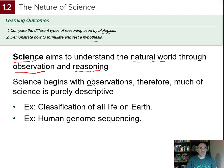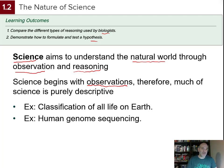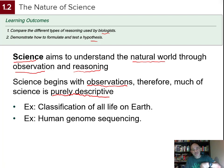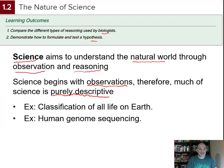All science begins with observations. Observational science is descriptive rather than experimental. When done in a very systematic way with reduced bias and careful data recording, it is a very valuable form of science. Good examples include classifying life forms into related groups and testing those classifications, or sequencing the human genome — the full set of genes found in human chromosomes.